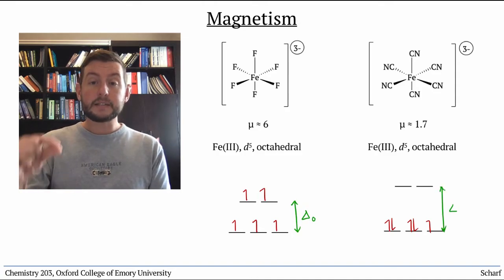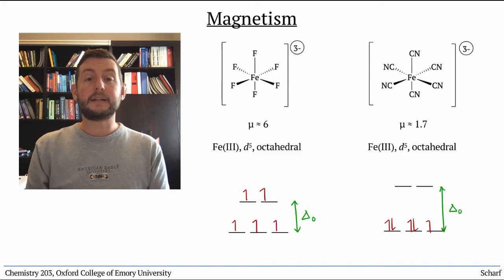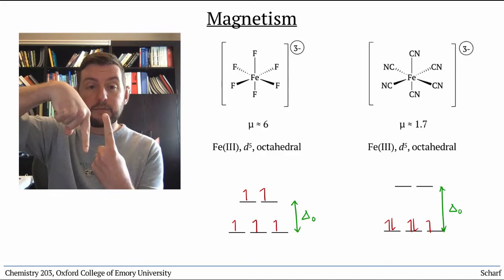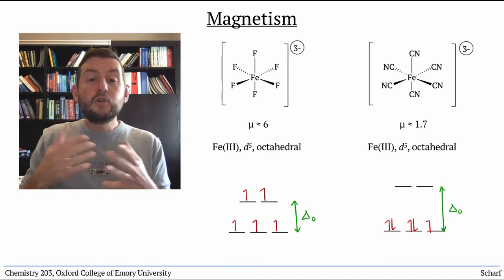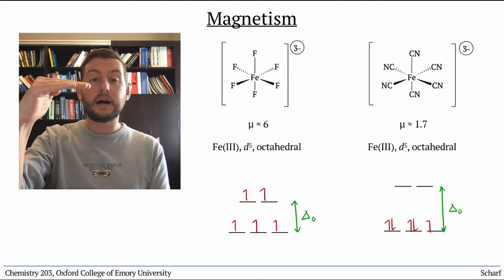For the fluoride complex, delta-octahedral is quite small. So small, in fact, that the electron-electron repulsion that you would get by pairing up that fourth electron is greater than the energetic cost of putting it in the higher energy orbital.